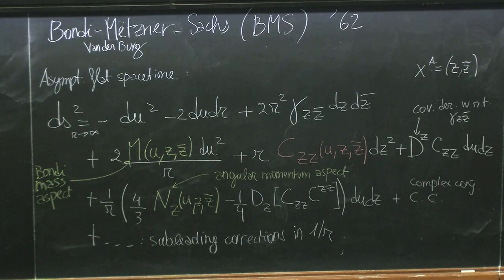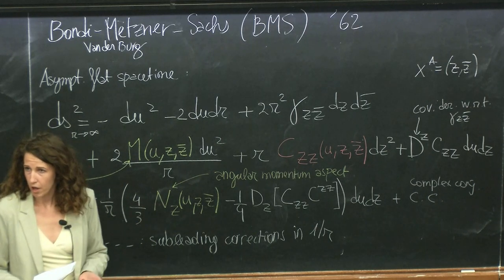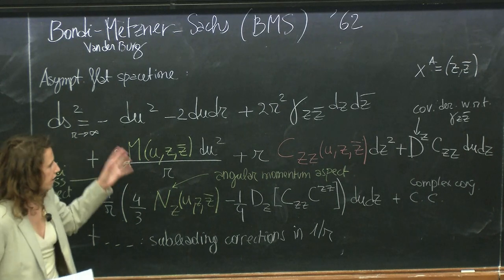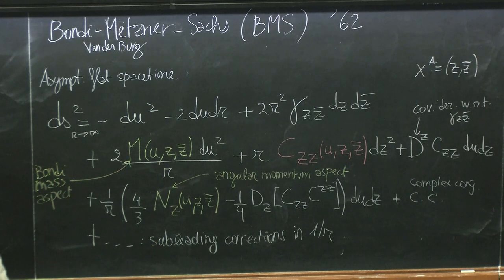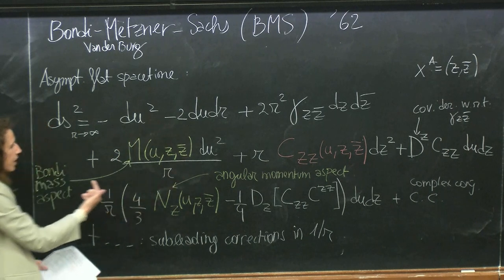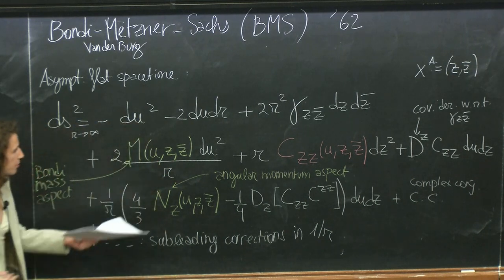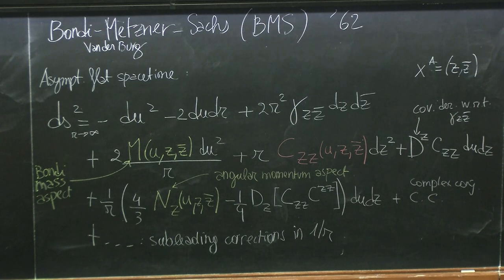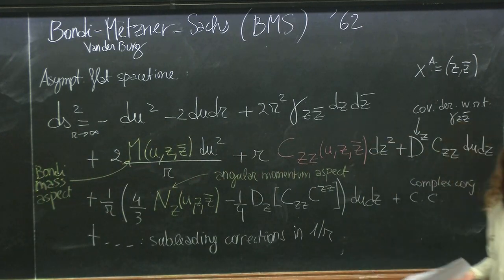Roughly speaking, M just encodes the total energy of the system you're describing, and N has to do with the angular momentum. If you take a Kerr metric black hole solution and write it in these coordinates, you will see that M is just the mass of the black hole — a constant in that case. But here I allow these functions to depend arbitrarily on the retarded time and angles. Similarly, the angular momentum aspect is related to the angular momentum of the Kerr black hole.